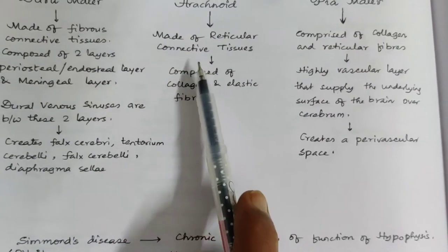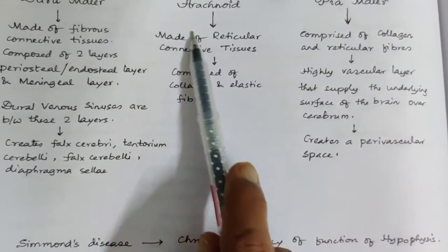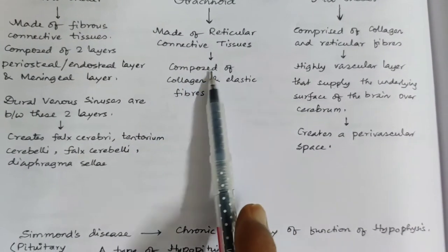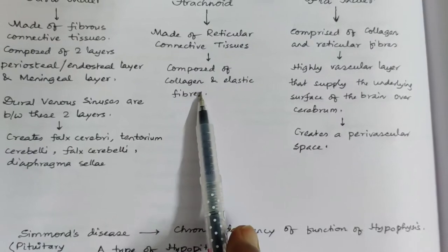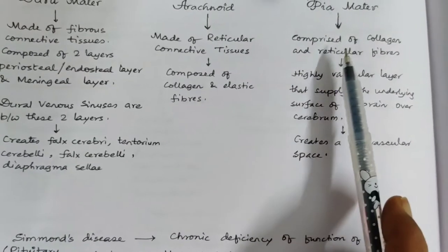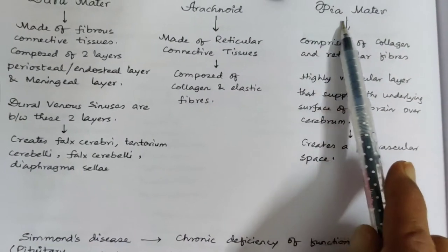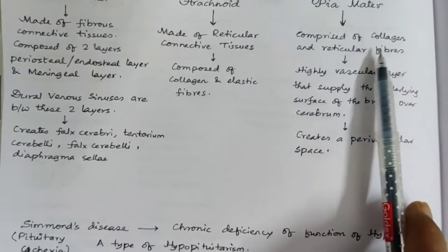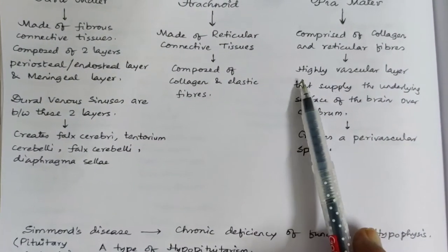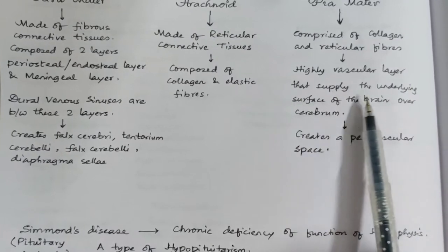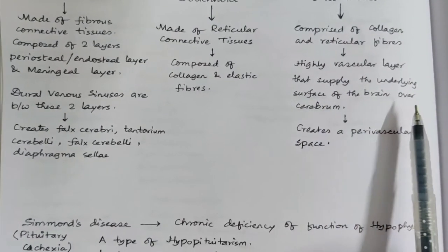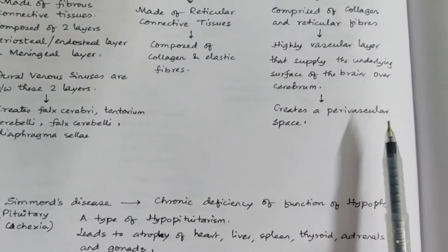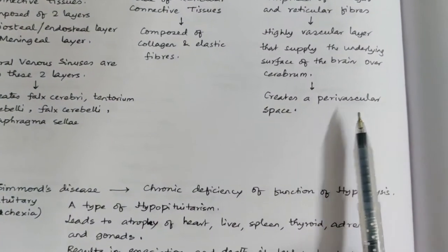The middle layer, arachnoid mater, is made up of reticular connective tissue composed of collagen and elastic fibers. The innermost layer, pia mater, is comprised of collagen and reticular fibers. It is a highly vascular layer that supplies the underlying surface of the brain; over the cerebrum it creates a perivascular space.